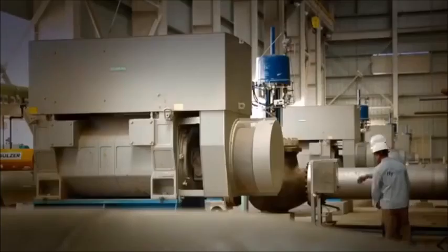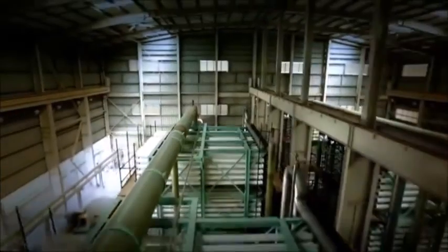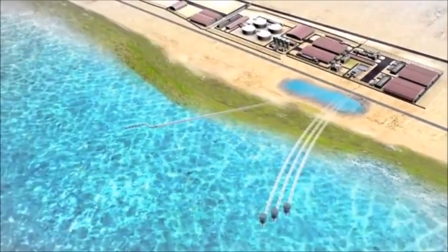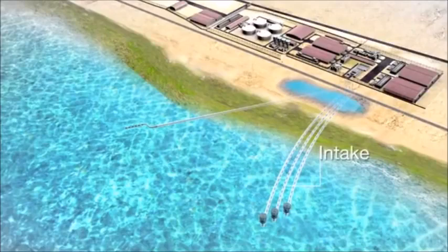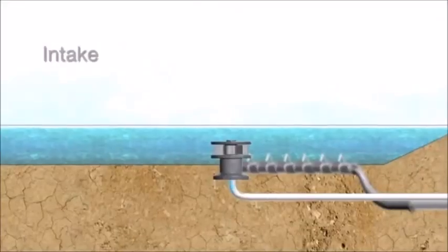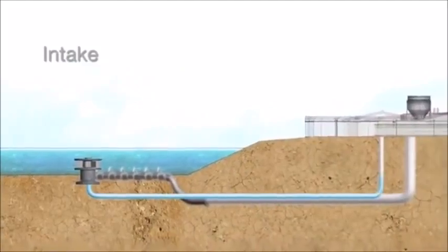In desalination, seawater undergoes a series of treatment processes before it is turned into fresh water. To draw water from the sea, a tunneling technique called pipe jacking was used to burrow some 10 meters below sea level for the pipes to extend to the sea. Three intake tunnels and one outfall tunnel were constructed in this manner.